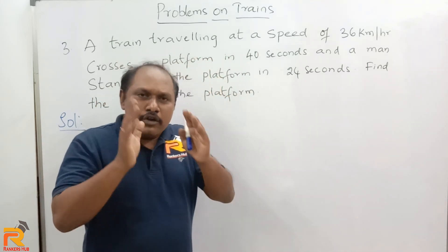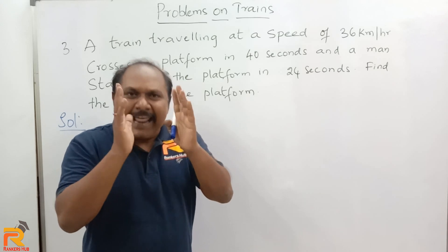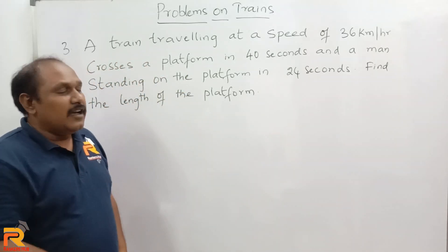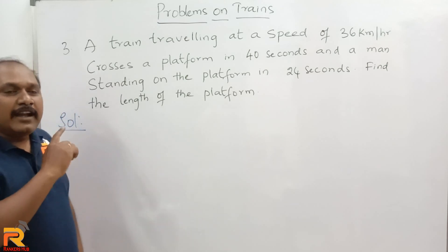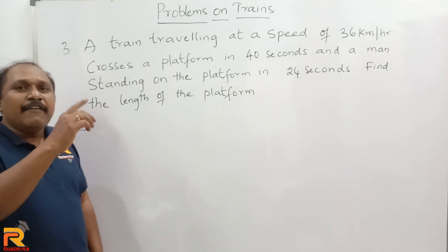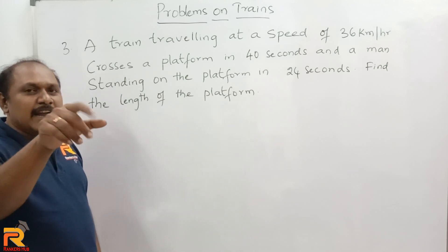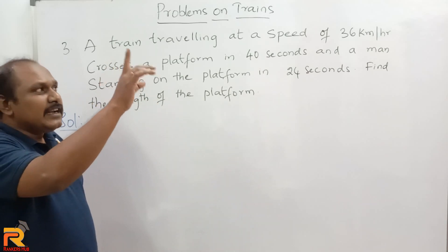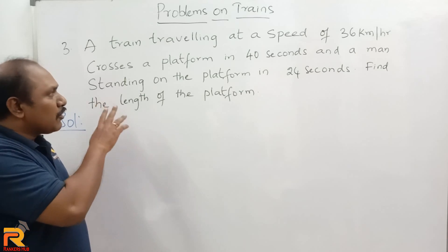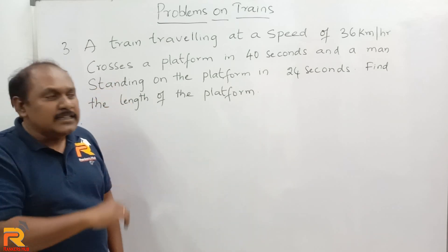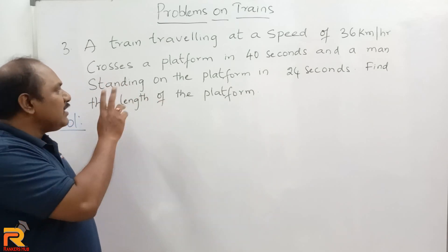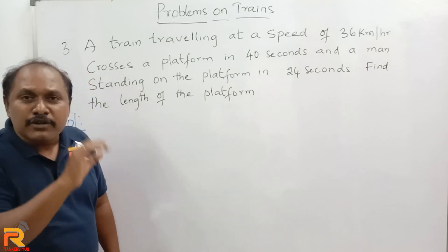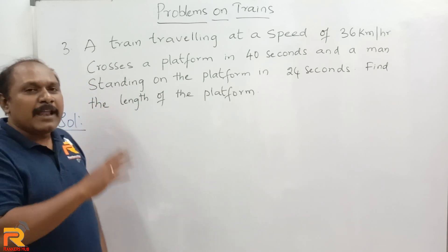Now I want all of you to simply analyze and try to answer this question in 5 seconds. After reading the question, take 5 seconds and try to answer it. A train traveling at a speed of 36 kilometers per hour crosses a platform in 40 seconds and a man standing on the platform in 24 seconds. Find the length of the platform.